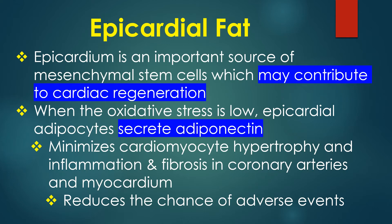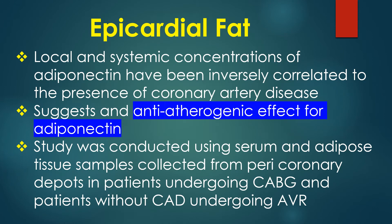When oxidative stress is low, epicardial adipocytes secrete adiponectin. Adiponectin minimizes cardiomyocyte hypertrophy and inflammation as well as fibrosis in coronary arteries and myocardium, thereby reducing the chance of adverse events. Local and systemic concentrations of adiponectin have been inversely correlated to the presence of coronary artery disease, suggesting an anti-atherogenic effect of adiponectin.